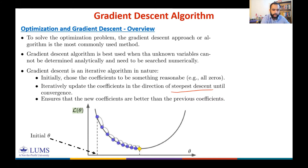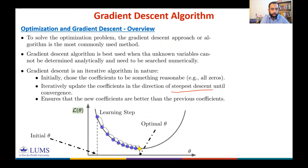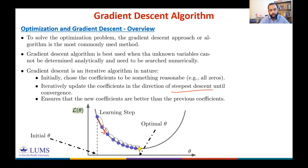The steps taken are called learning steps. You move from your initial θ toward the optimal θ by taking these learning steps. If you know you need to move in a particular direction from your starting point, you can move toward your optimal θ. Let me revisit this and then formulate gradient descent.